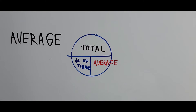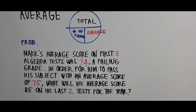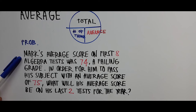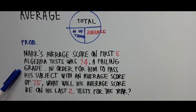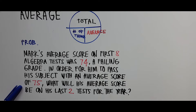Now we have a word problem on the board — an application of this average pie. It reads: Mark's average score on his first eight algebra tests was 74, a failing grade. In order for him to pass his subject with an average score of 75, what will his average score be on his last two tests for the year? We have those numbers given here — on the first eight tests he got an average of 74.